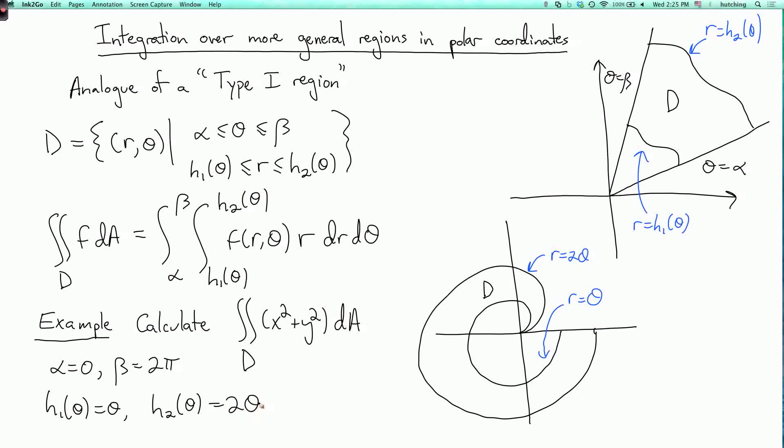So let's work out this integral on the next page. We have that the double integral over D of x squared plus y squared dA is the integral as theta goes from 0 to 2 pi, then r goes from theta to 2 theta, and then the function we want to integrate is r squared, and then we have to multiply by an additional r, which is the magnification factor, then dr d theta.